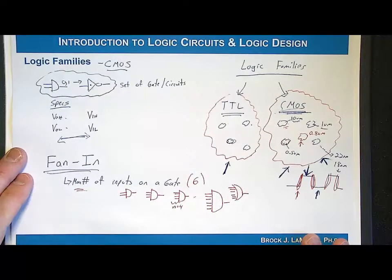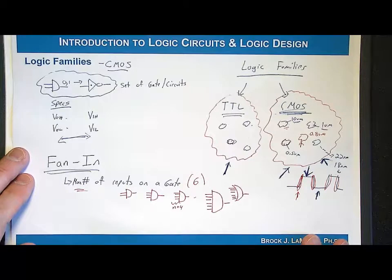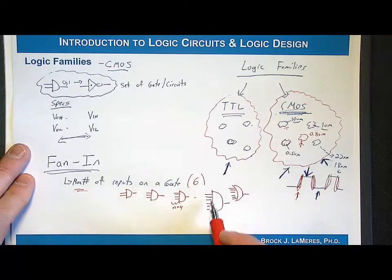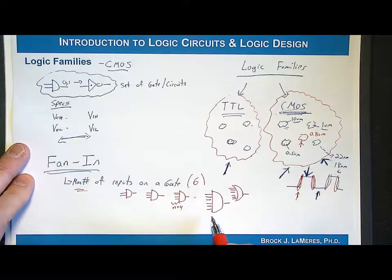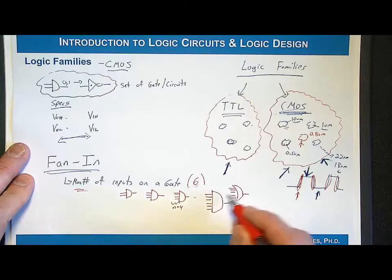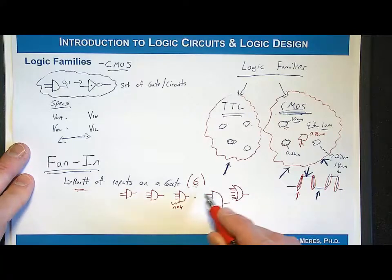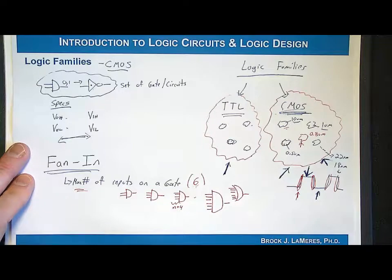That becomes important as you get larger digital systems together because as the circuits get larger, you might require something that has a seven-input AND operation. If your fan-in is only six, that means you're going to have to do some logic manipulation to break up that seven-input AND operation to use technology that is available.